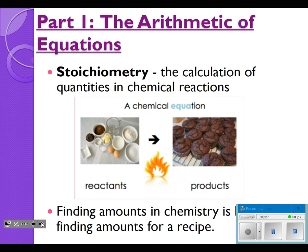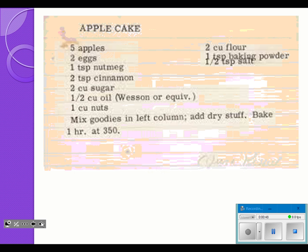Part one is really just the arithmetic of equations, and it's Stoichiometry — the calculation of quantities in chemical reactions. A chemical equation starts with reactants and ends up with products. It's just a way of finding amounts in chemistry, kind of like using the amounts in a recipe. If I have my apple cake recipe, I'd start with five apples, two eggs, one teaspoon of nutmeg, and all of that comes together to one product. But if I don't use the correct proportions, I might not get the correct product.